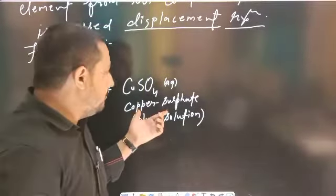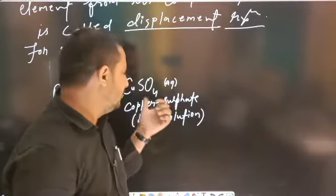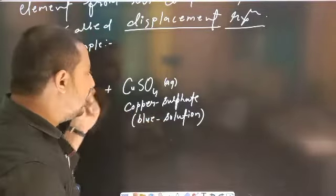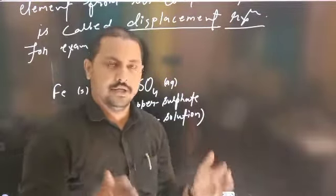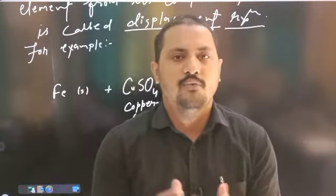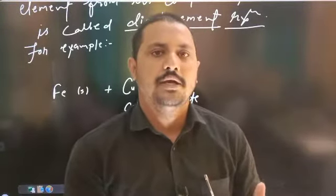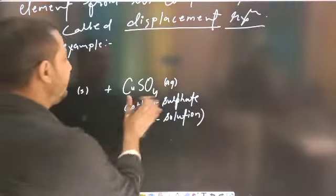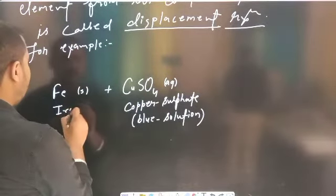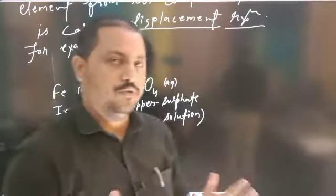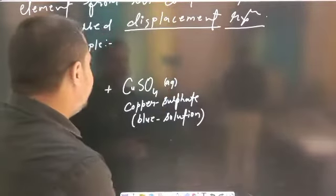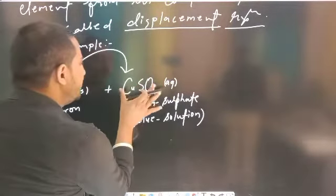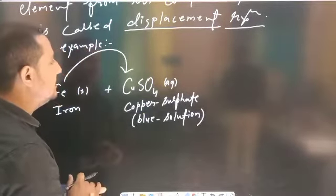Jab copper sulfate ke blue solution ke andar iron nail, lohe ki keel, dabo dete hain — dekhiye, ek displacement reaction hoti hai. Ye jo iron hai, woh copper sulfate compound se copper ko displace kar deta hai, aur khud uski jagah le leta hai.